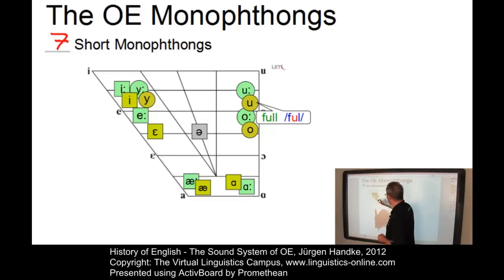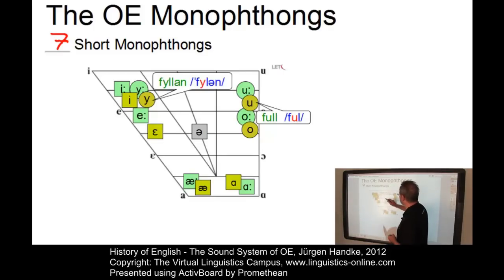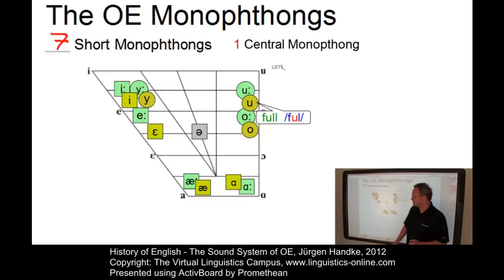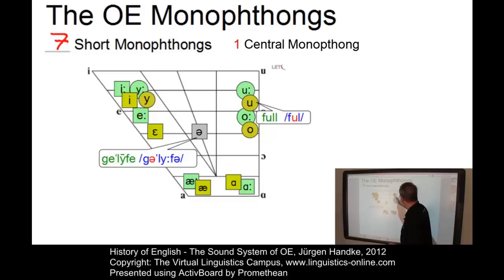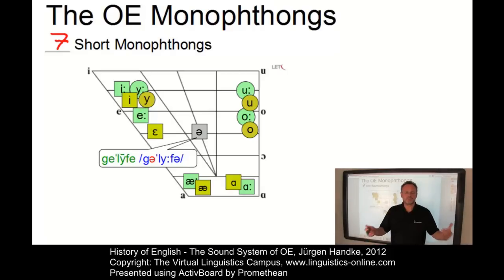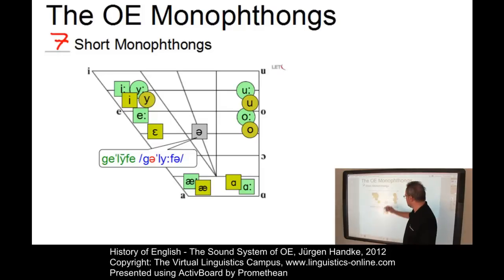And here is the equivalent rounded front vowel: short Ȳ as in 'fyllan', present-day English 'fill'. Last but not least, there was one central vowel, namely the schwa — the one in 'gelīefan', present-day English 'believe'. So in unstressed position we have this short central vowel.